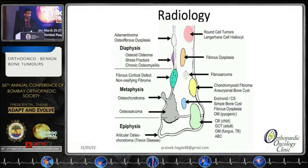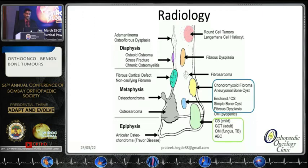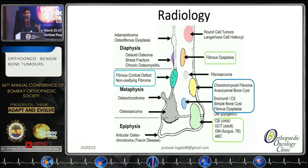This is a very important diagram we must have seen during residency training. We have epiphysial lesions like chondroblastoma or giant cell tumors. Then metaphysial lesions — chondromyxoid fibroma, aneurysmal bone cysts, enchondromas. Then diaphysial lesions — fibrocortical defect, non-ossifying fibroma, fibrous dysplasia, and osteoid osteomas.